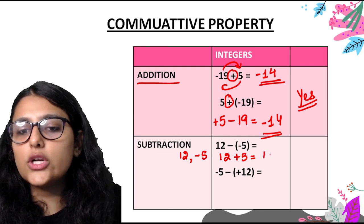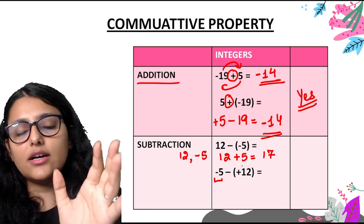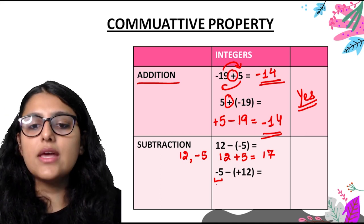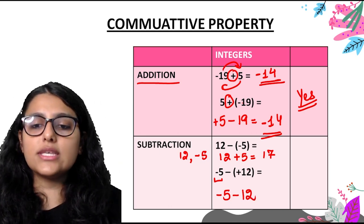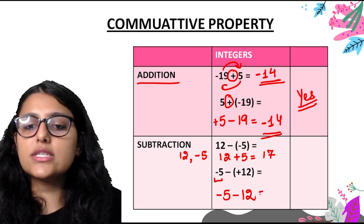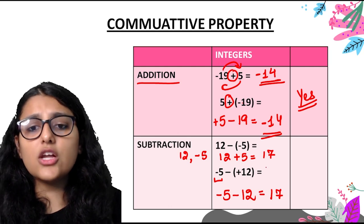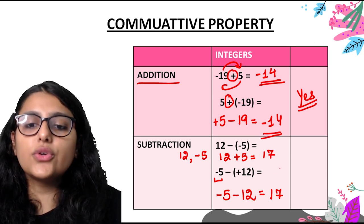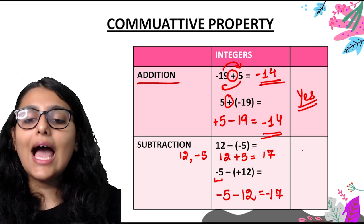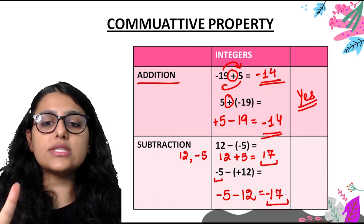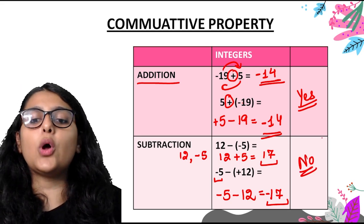Interchanging: minus 5 minus 12. Two negative signs mean addition: minus 5 minus 12 equals minus 17. So plus 17 and minus 17 are not the same — the answers differ. Therefore, no, the commutative property does not hold true for subtraction of integers.